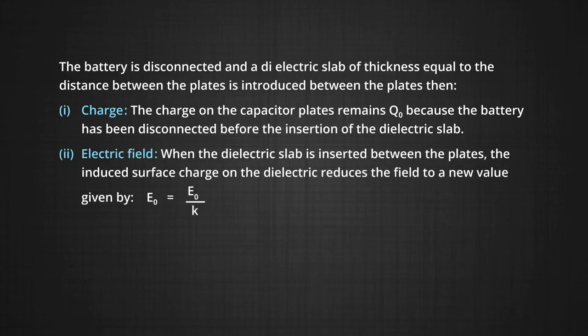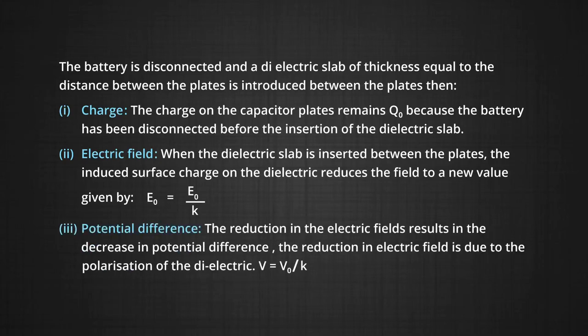Now, point 2: the effect on electric field. When the space between the plates is filled with the dielectric, the dielectric will get polarized, thus inducing an electric field in the dielectric. The induced electric field is opposite to the applied field, as we have discussed earlier. So, the electric field reduces to a new value, that is E equal to E₀ by K. The third point: the effect on potential difference. The reduction in the electric field will also result in a decrease in potential difference, due to the polarization of the dielectric. Therefore, V will be equal to V₀ by K.